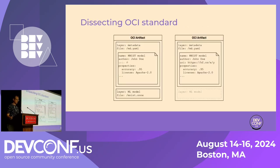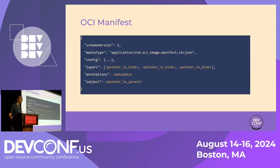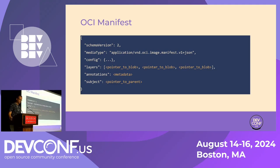So what does an OCI artifact look like on the inside? It's just a bunch of files and metadata. With OCI, everything starts with a manifest, which is a simple JSON. There are two interesting things: one is an array called layers, which in the case of OCI artifacts is just a pointer to a list of files — each blob has a name, a hash, and file type. And annotations, which contain some metadata. There's also a subject field, which allows you to link and attach different OCI artifacts together, creating a hierarchy.